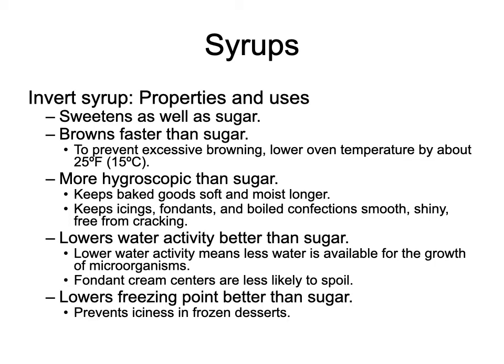High fructose corn syrup is another full invert equivalent — it's corn syrup with a slightly higher amount of fructose, which helps keep other sugars from crystallizing and retains more moisture, so muffins don't go stale as quickly. Invert syrup properties include: it sweetens just as well as sugar; it browns faster, so you may want to lower oven temperature; it's more hygroscopic, keeping baked goods soft and moist longer; it helps keep icings fine and boiled confections smooth and shiny; and it helps things stay fresh longer.